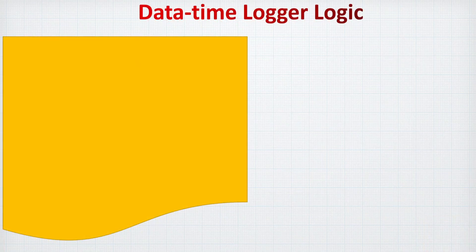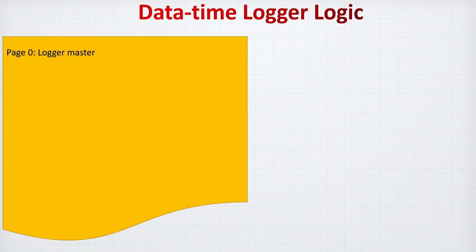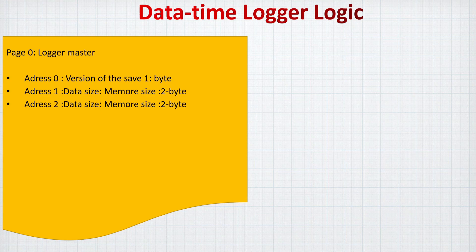Before jumping to the circuit, let me share a little bit about how this time data logger works. The AT24C32 EEPROM memory has 32 kilobits of memory, divided into bytes, giving you 4,096 lines of memory to save. This memory is also divided into 32-byte pages, so you have 256 pages, each page having 32 lines, each line saving one byte. We are going to use page zero of the AT24C32 to save the master data for the time logger.